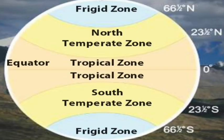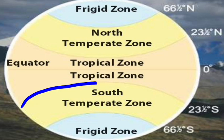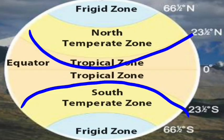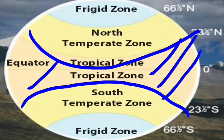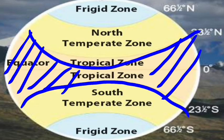The earth can be divided into three major climate zones. The first is the tropical zone, which is found between 0 degrees to 23 and a half degrees both north and south of the equator, between the Tropic of Cancer and the Tropic of Capricorn. The second is the temperate region, found between 23 and a half degrees to 66 and a half degrees both north and south of the equator.